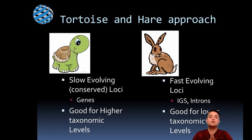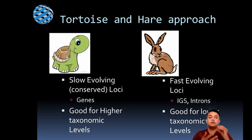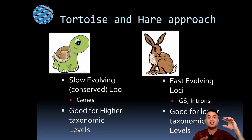There is an approach called the tortoise and hare approach, which concerns which locus to choose for molecular systematic studies. Slow-evolving loci, like conserved gene regions, are good for higher taxonomic levels such as class or order, while fast-evolving loci like intergenic sequences (IGS) or introns like ITS are good for within-species or species-level taxonomy. There is basically an inverse relationship between how fast a sequence evolves and which taxonomic level it is suitable for.